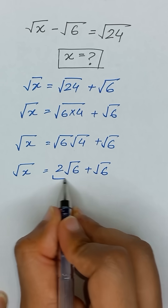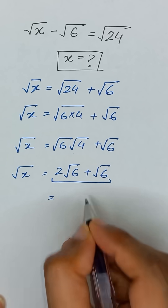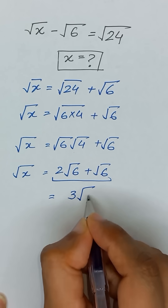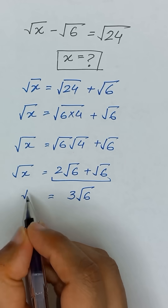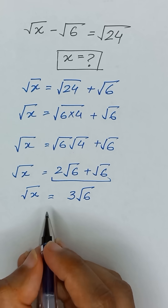Now these are like terms so we can add them. It will become 3 times square root of 6 is equal to square root of x.